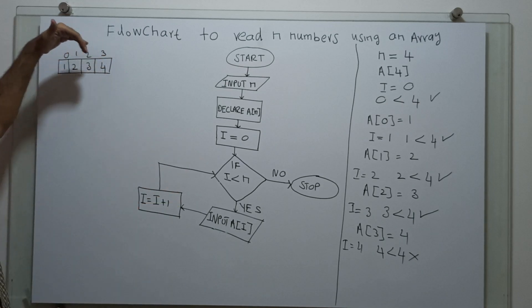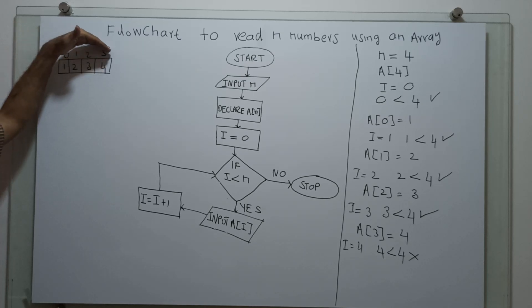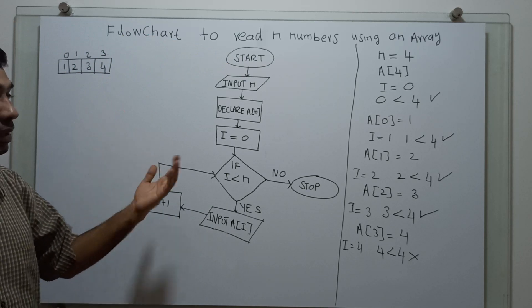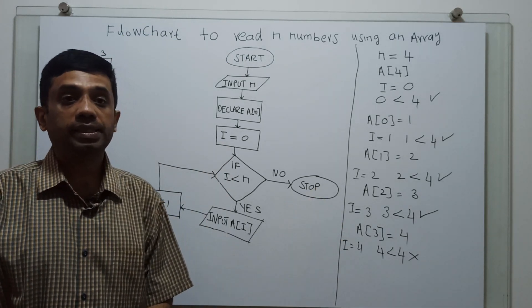So, 0 to 3. When array starts from 0, it ends from n minus 1. So, 0 to 3. I have stored the 4 numbers. That's it. This is the way we can use arrays in the flowchart.